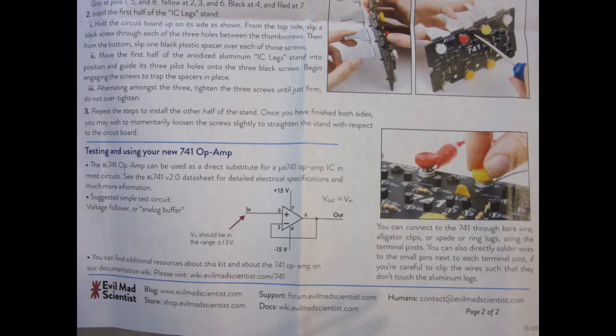The manual recommends testing the 741 circuit by rigging up a simple non-inverting voltage follower circuit, which requires no components other than an input voltage source and a means to monitor the output voltage.